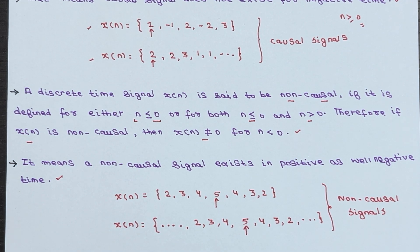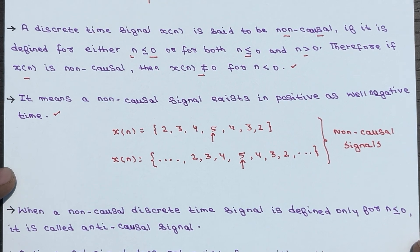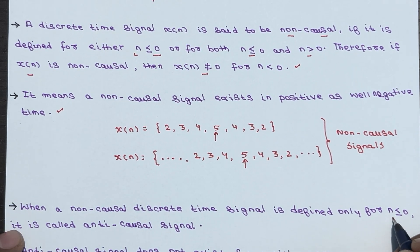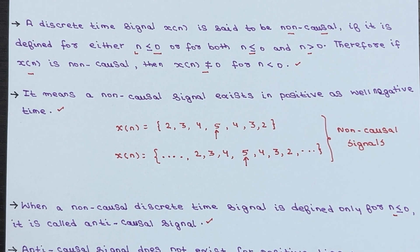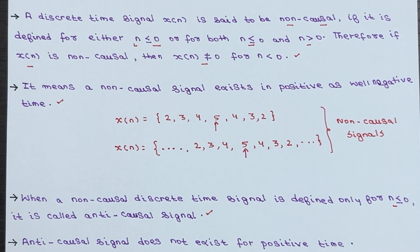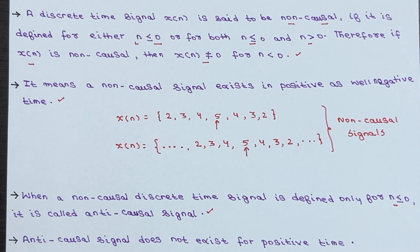When a non-causal discrete time signal is solely defined for n less than or equal to 0, it is referred to as an anti-causal signal. This means an anti-causal signal does not exist for positive time values.